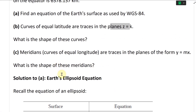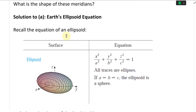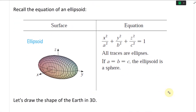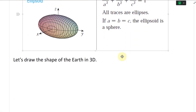Solution to part A: Earth's ellipsoid equation. Recall the equation of an ellipsoid from the standard form: x squared over a squared, plus y squared over b squared, plus z squared over c squared equals 1. All traces are ellipses, and if a equals b equals c, the ellipsoid is a sphere.